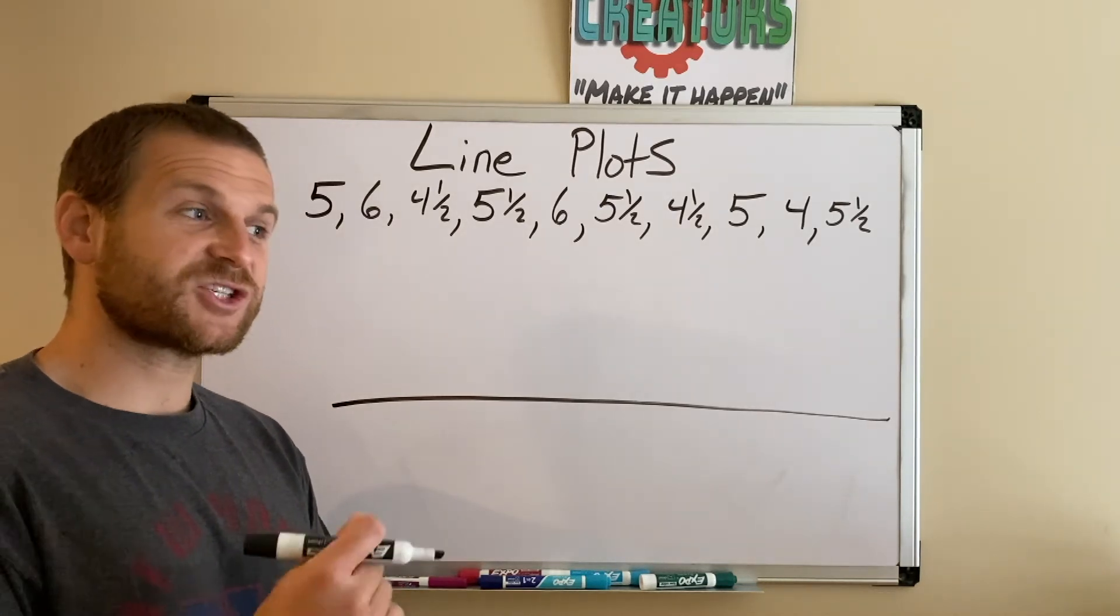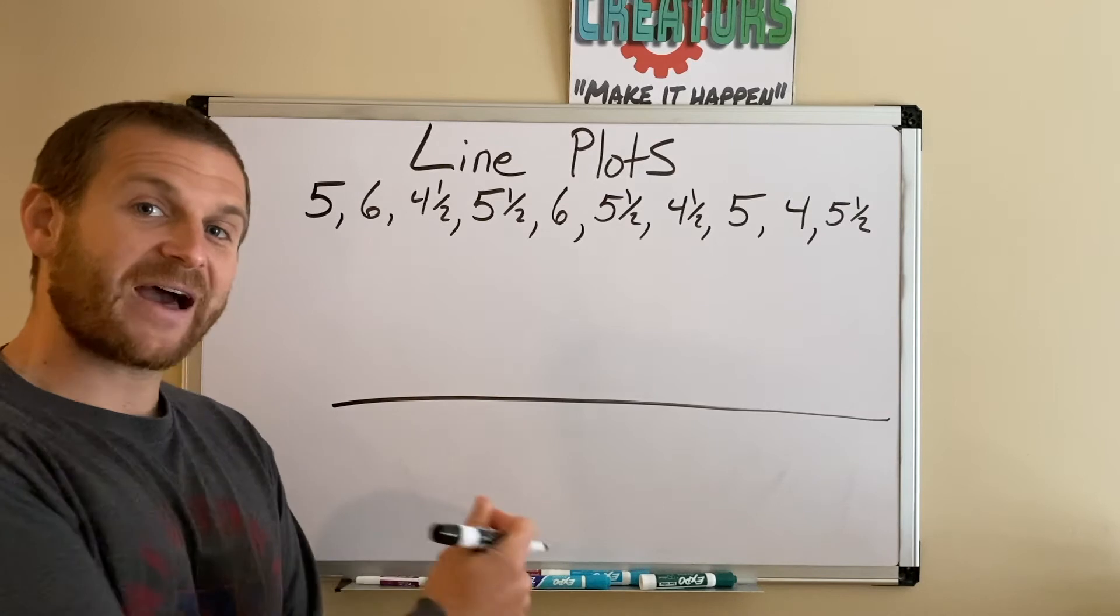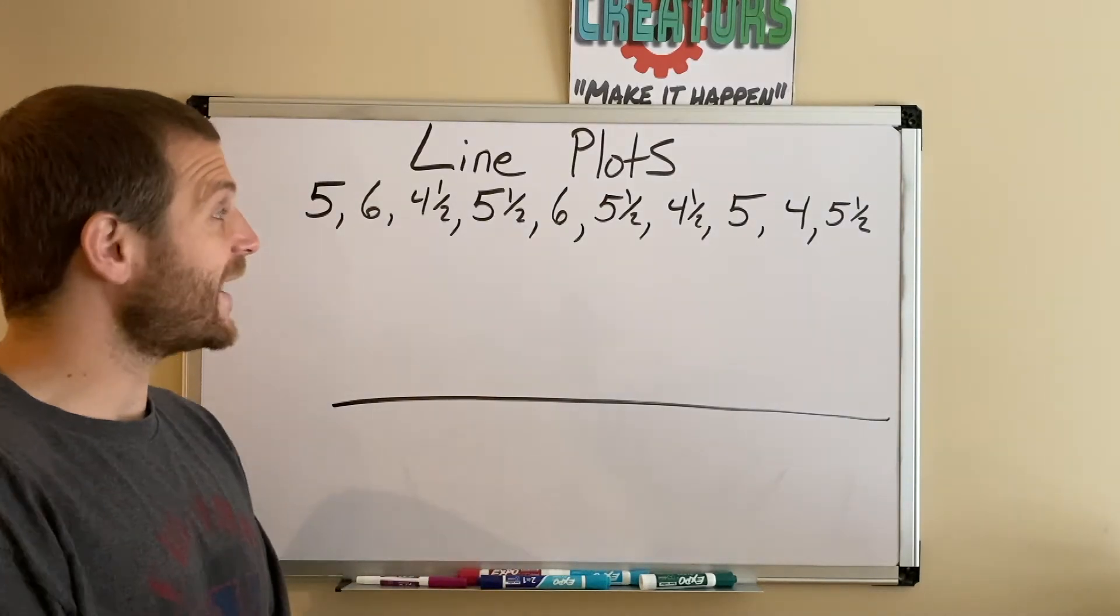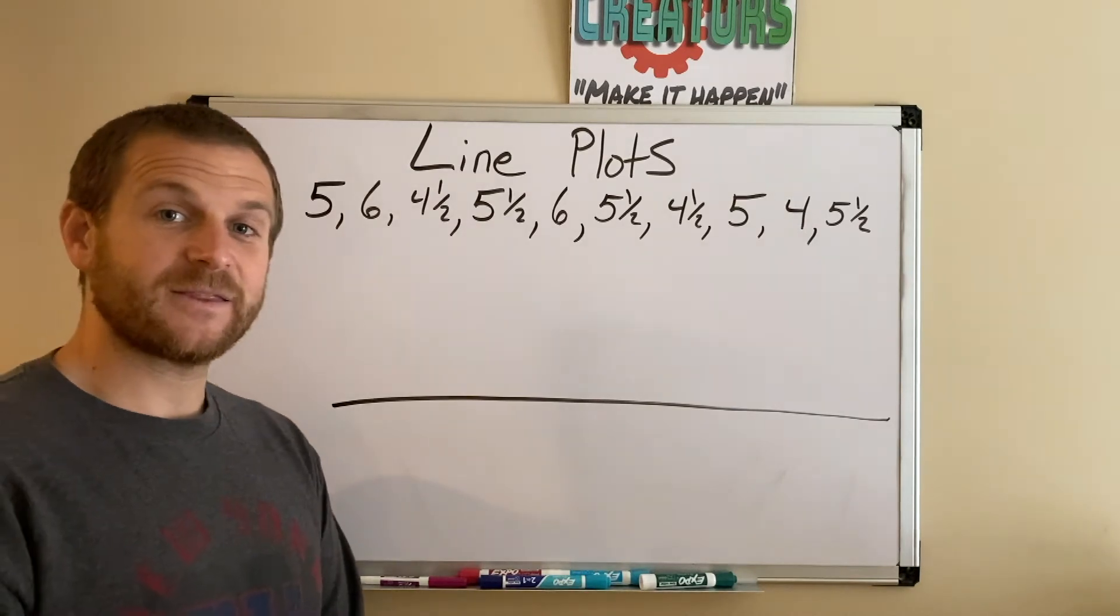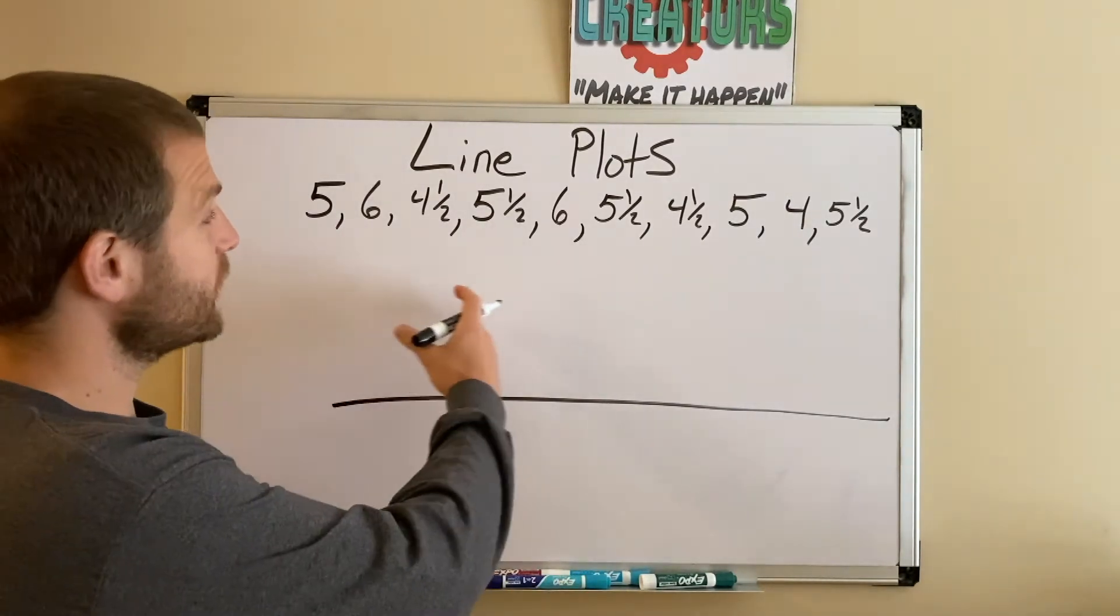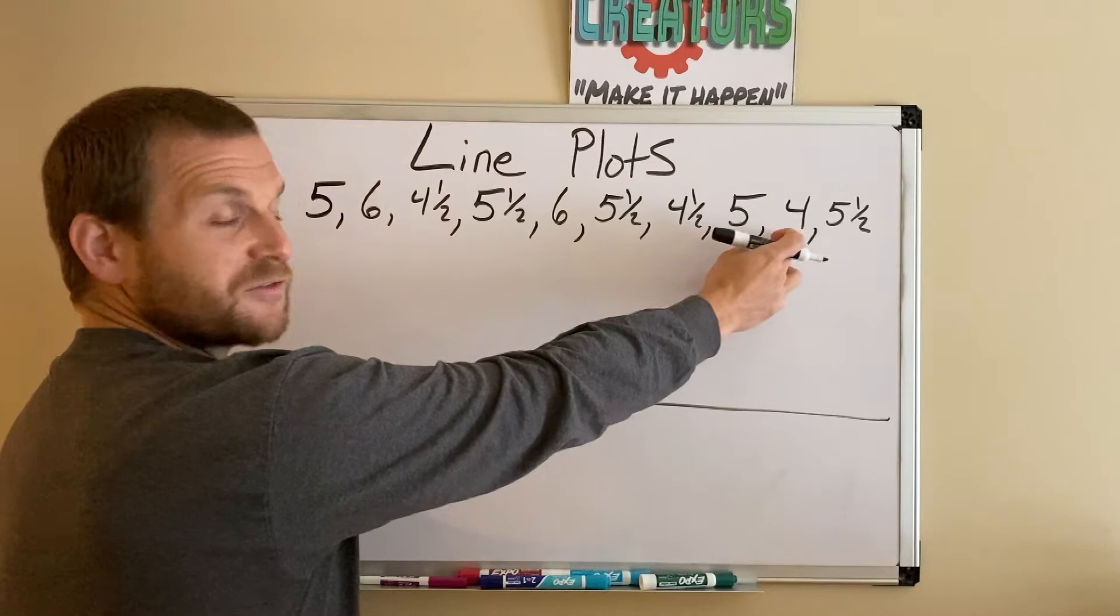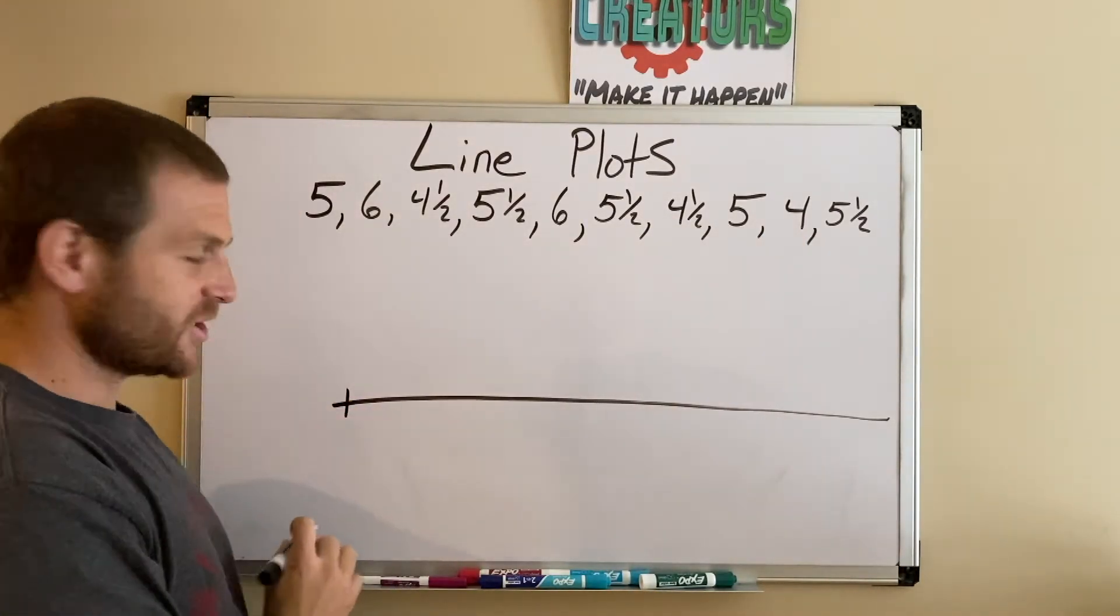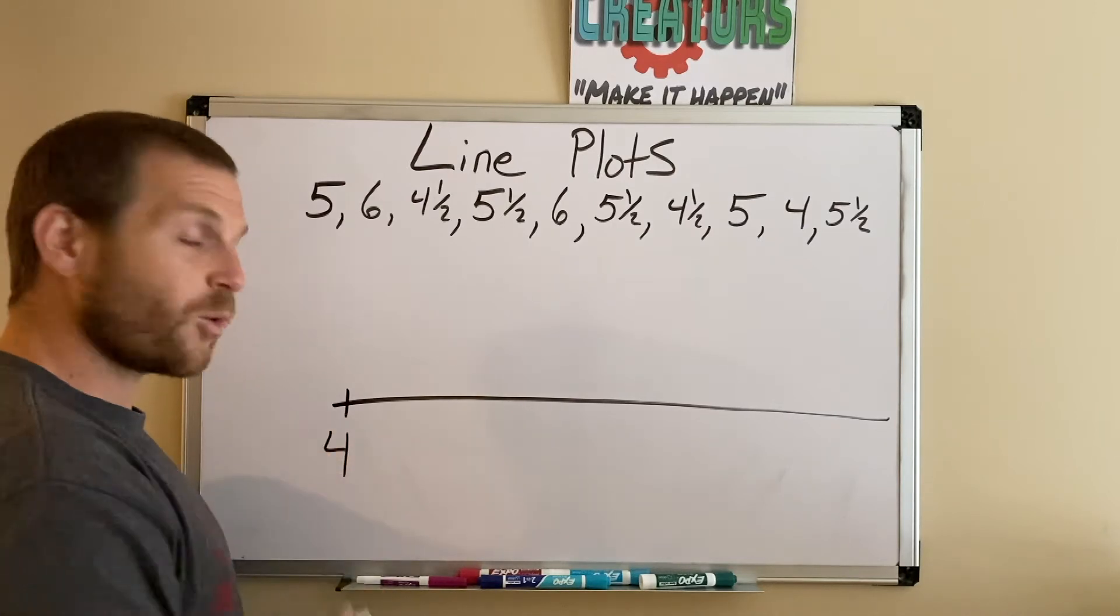The most important thing we need to know is what is the smallest or the least value that we have up here. What's the least amount of time it took anybody to say the alphabet? If we look through, we have all the way down to 4 right here. So I'm going to put just a little hash and 4 all the way on the left side of my line plot.